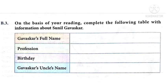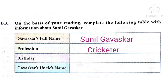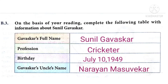The first question is Gavaskar's full name. His full name is Sunil Gavaskar, and his profession — we already know — he is a cricketer. Then his birthday is July 10, 1949, as we have gathered the information from the chapter. And Gavaskar's uncle's name — his uncle was Mr. Narayan Masu Vekar.